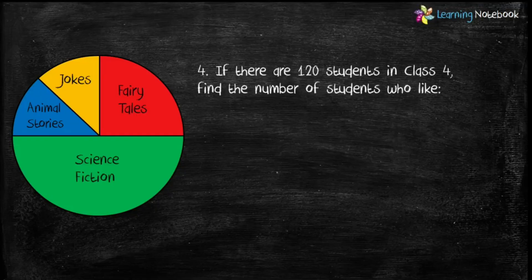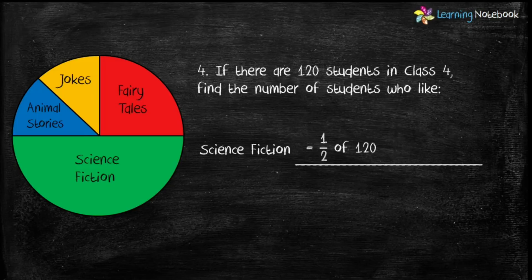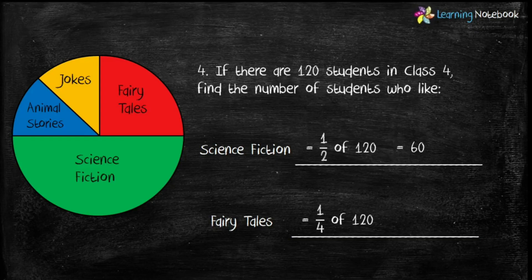Question four: if there are 120 students in class 4, find the number of students who like science fiction and fairy tales. Science fiction represents half of the circle, so number of students who like science fiction = 1/2 of 120 = 60. Fairy tales represents one-fourth of the circle, so number of students who like fairy tales = 1/4 of 120 = 30.